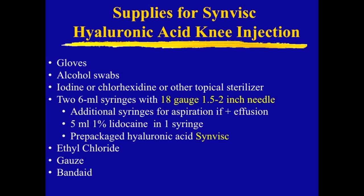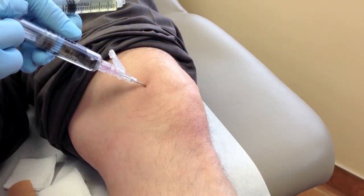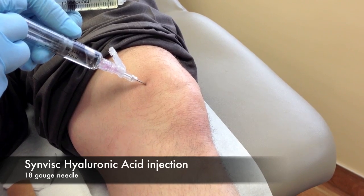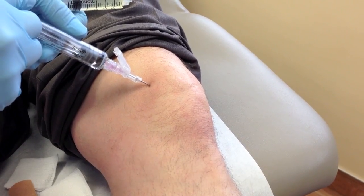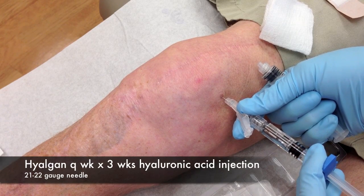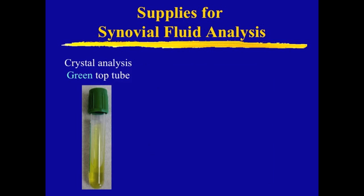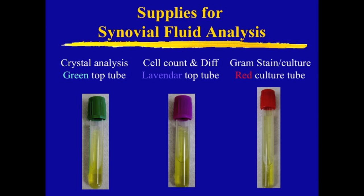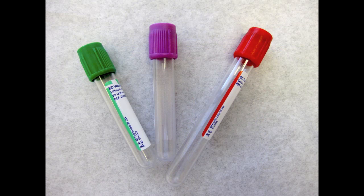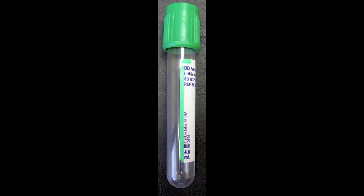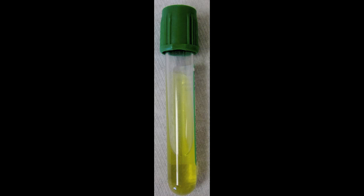The main difference in supplies for a hyaluronic acid injection is a larger bore needle due to the viscosity of the hyaluronate. We typically use an 18 gauge needle for Synvisc, although a 21 to 22 gauge needle is adequate for Hyalgan, which is slightly less viscous. If an effusion is present, consider sending synovial fluid for studies: a green top for crystals, lavender top for cell count, and a red top for culture and gram stain. Crystal disease can be concomitant in an arthritic knee and may guide future therapy towards cortisone or allopurinol for uric acid reduction.